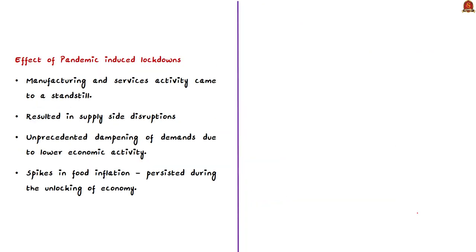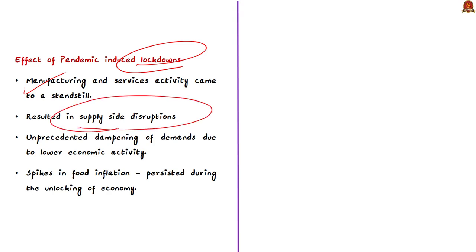The coronavirus pandemic hit our country and we imposed national and regional lockdowns to control the spread of the virus. These lockdowns affected the manufacturing and service sector — many industries and businesses were closed. Because of this disruption, the supply chain got severely affected.